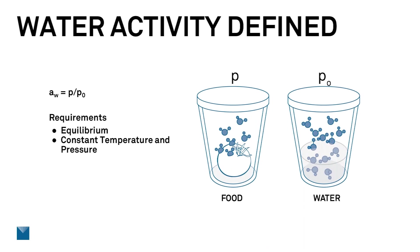Temperature and pressure need to be constant. Water activity at 25°C will be different than water activity at 35°C, and generally it will be higher. So if you're taking water activity measurements, you need to know that a reading at 25°C one day and a reading at a different temperature another day will not give the same water activity, because it is dependent on temperature being constant.